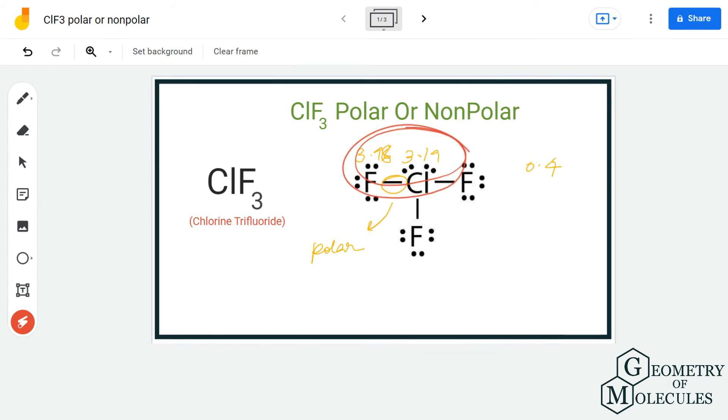the difference of electronegativity between chlorine and fluorine are not cancelled out. As a result, there is a non-zero dipole moment in this molecule, which makes ClF3 a polar molecule.